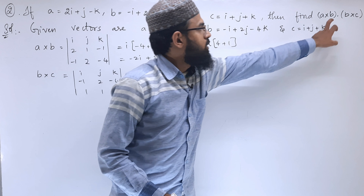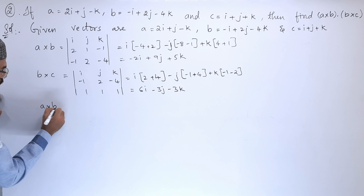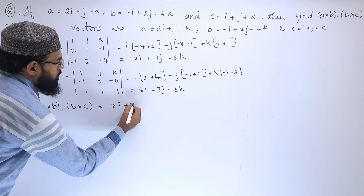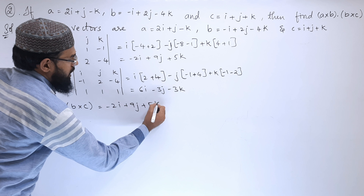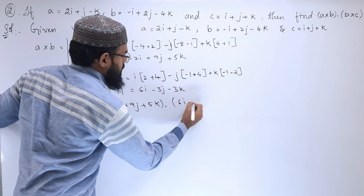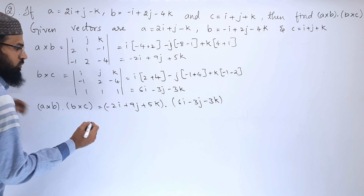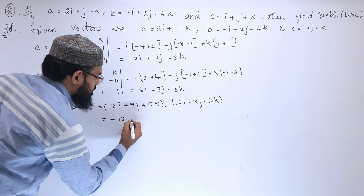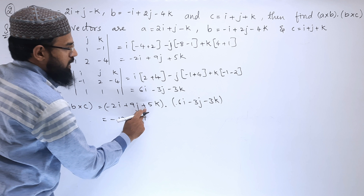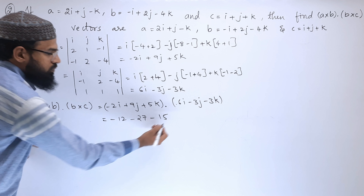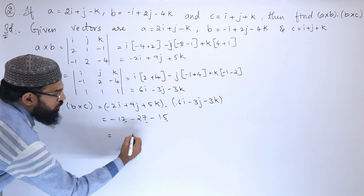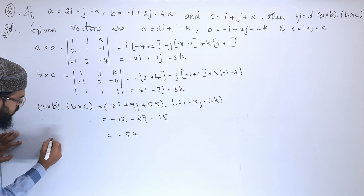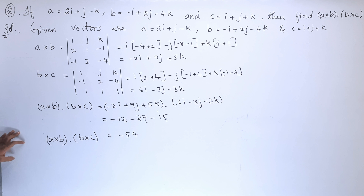Let us find the dot product: (a × b) · (b × c) = (-2i + 9j + 5k) · (6i - 3j - 3k). Computing: (-2)(6) = -12, (9)(-3) = -27, (5)(-3) = -15. Total: -12 - 27 - 15 = -54. The dot product of a × b and b × c is -54.